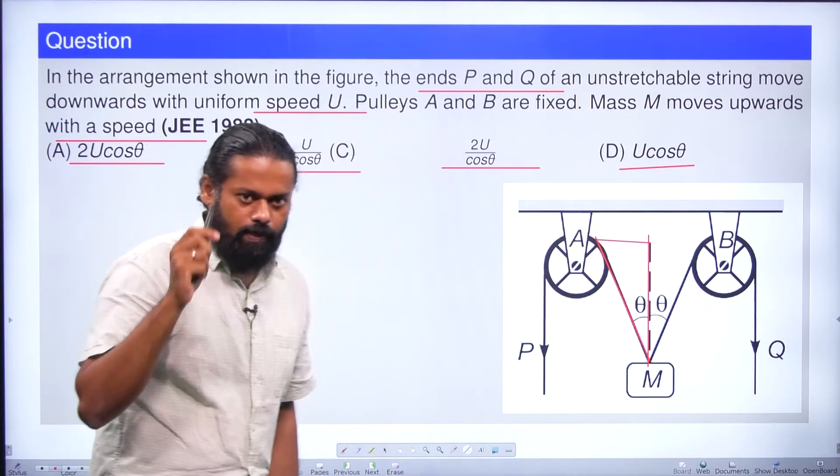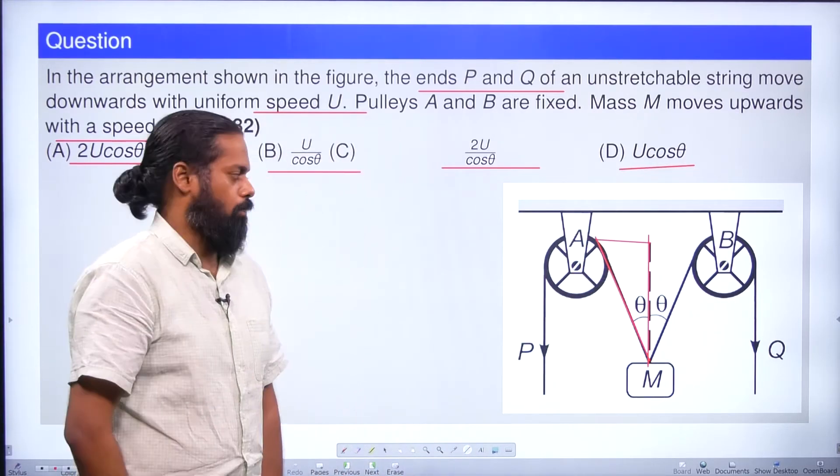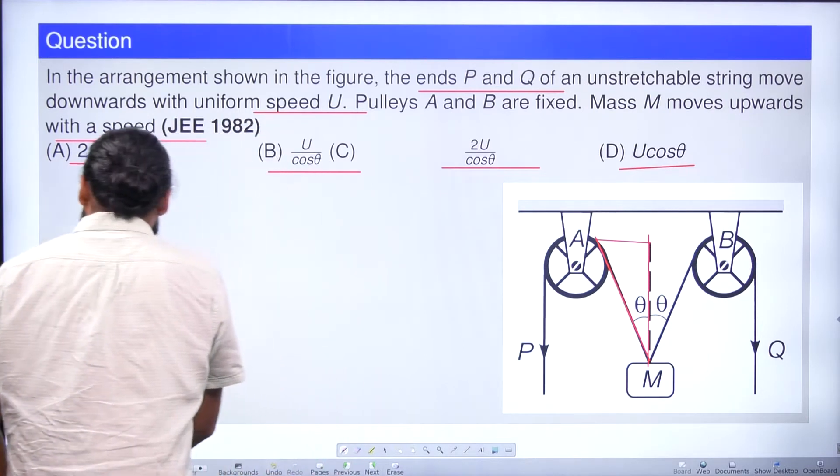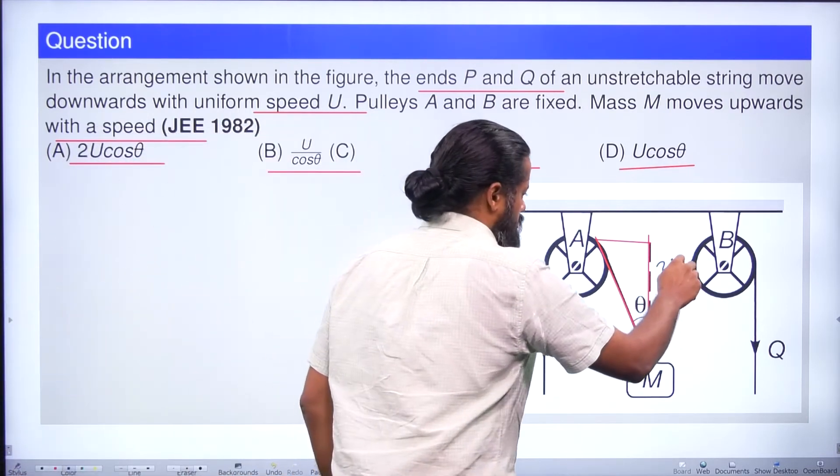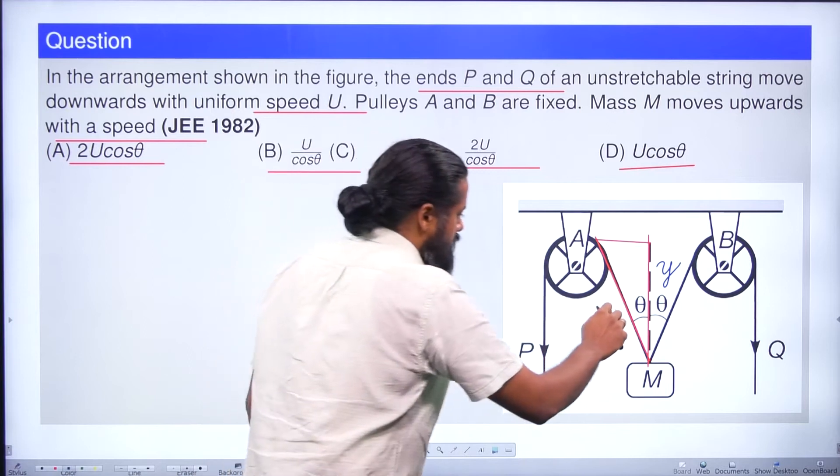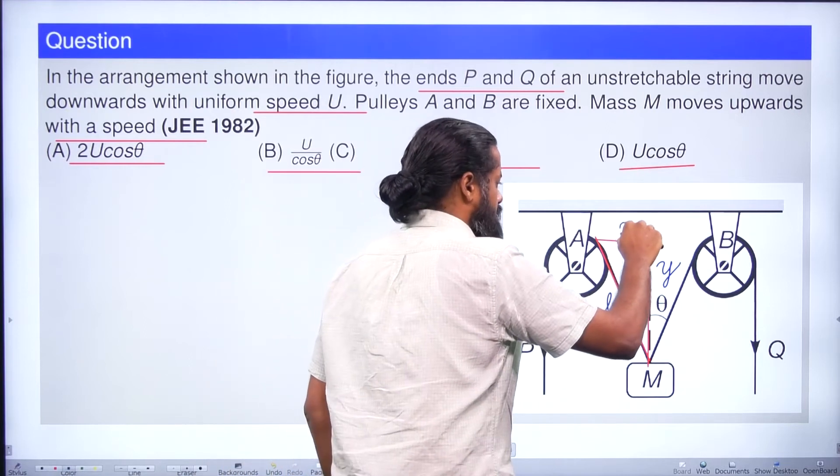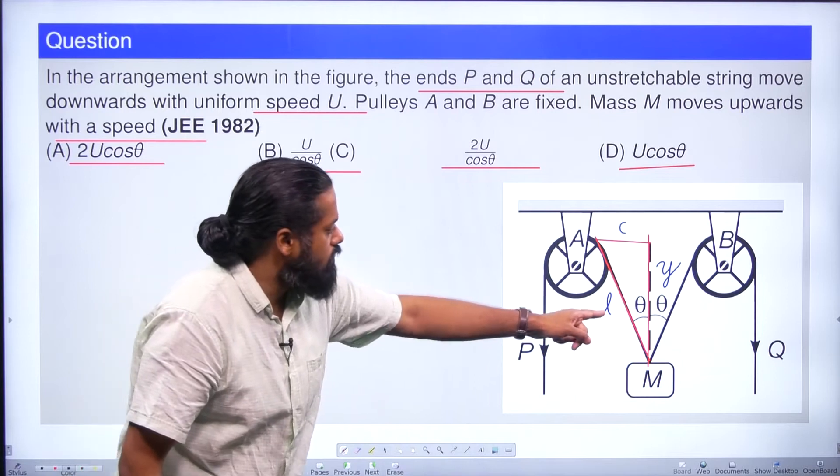So I'm getting a proper right angle triangle. A Pythagorean triangle is obtained. Now if I'm representing the distances, this is represented as y, this is l, and this is distance c. You can see this is a perfect Pythagorean triangle and you can apply Pythagorean theorem in this situation.